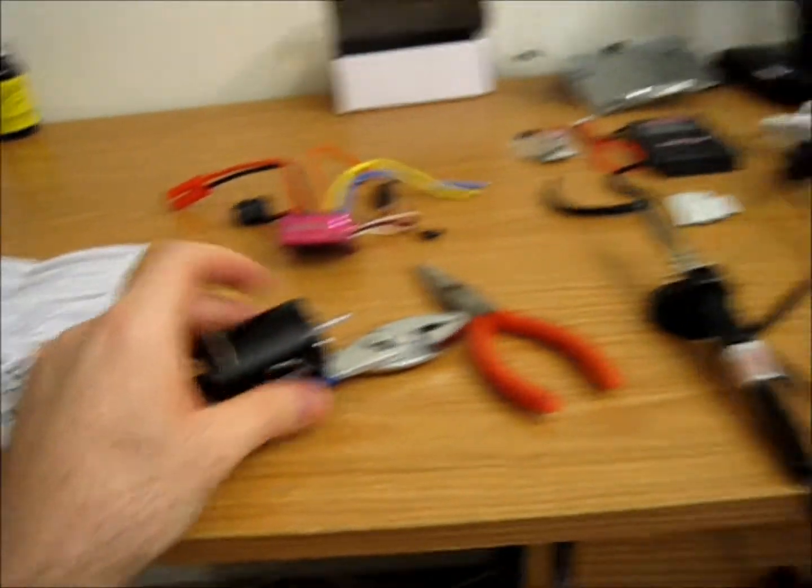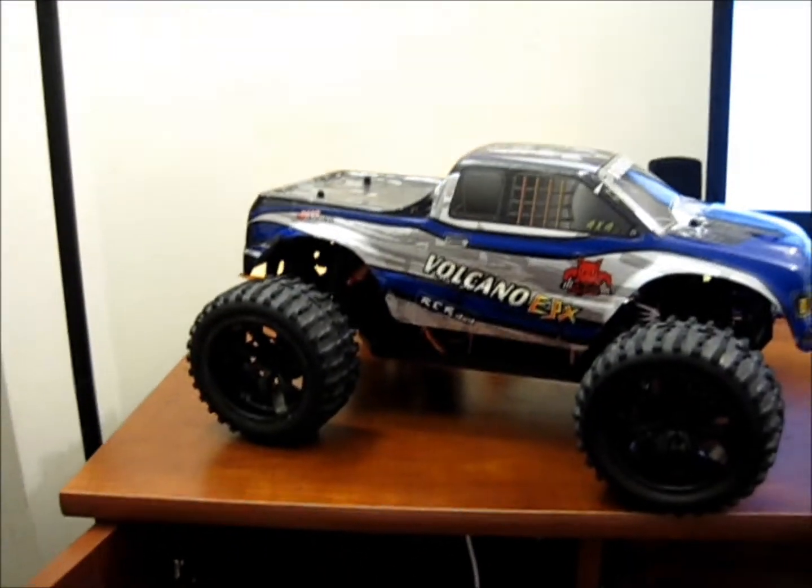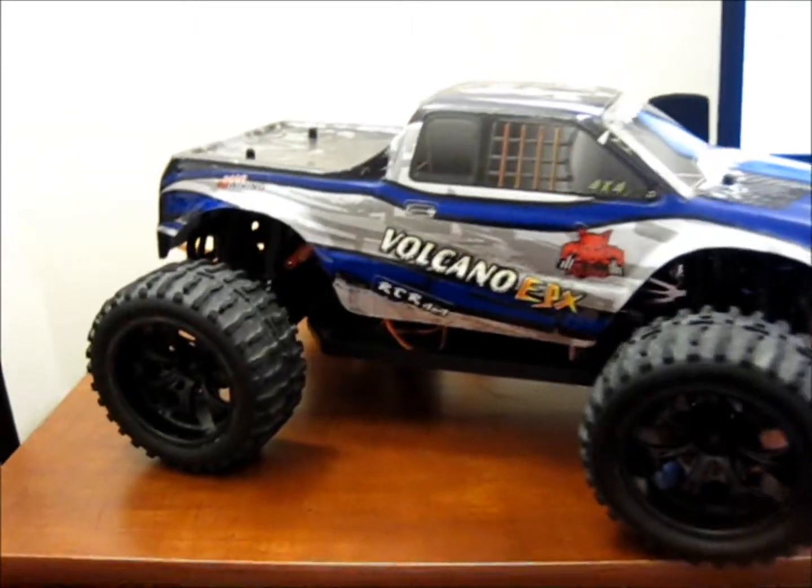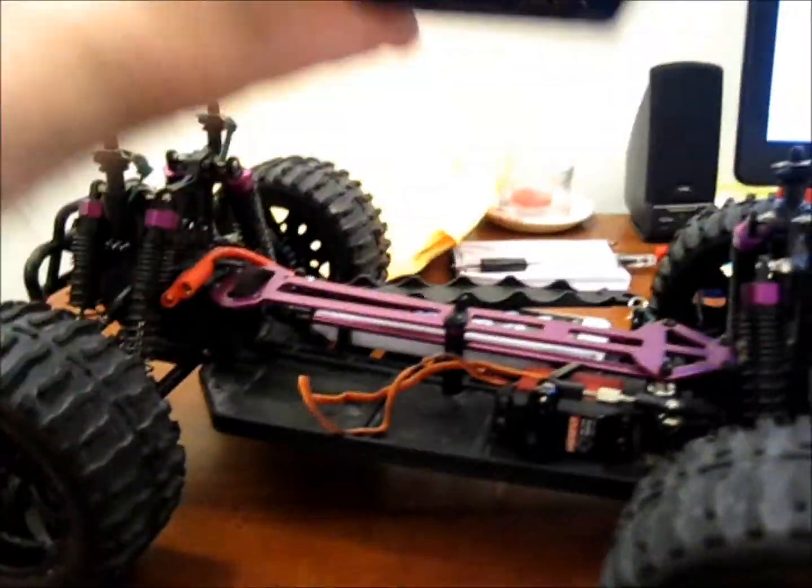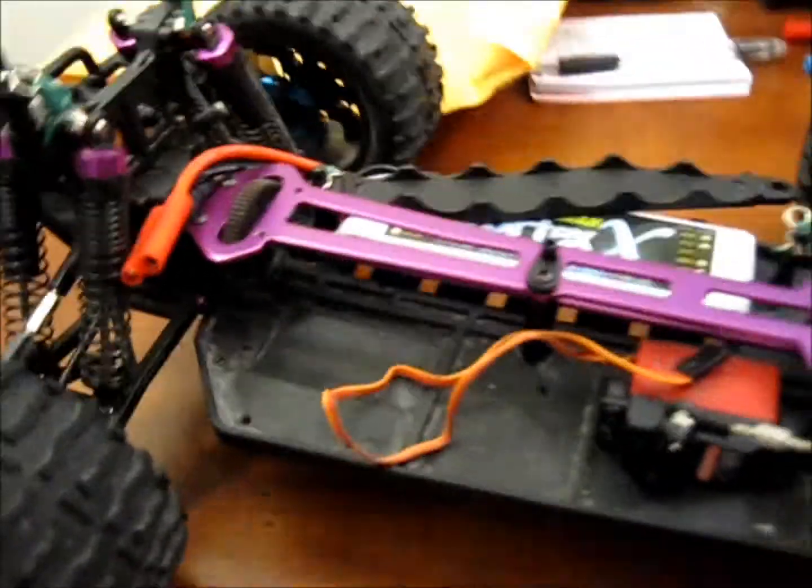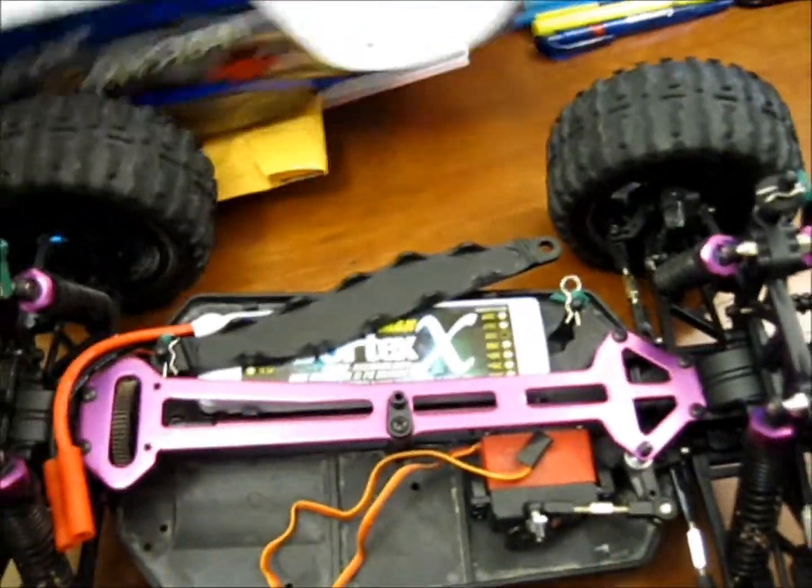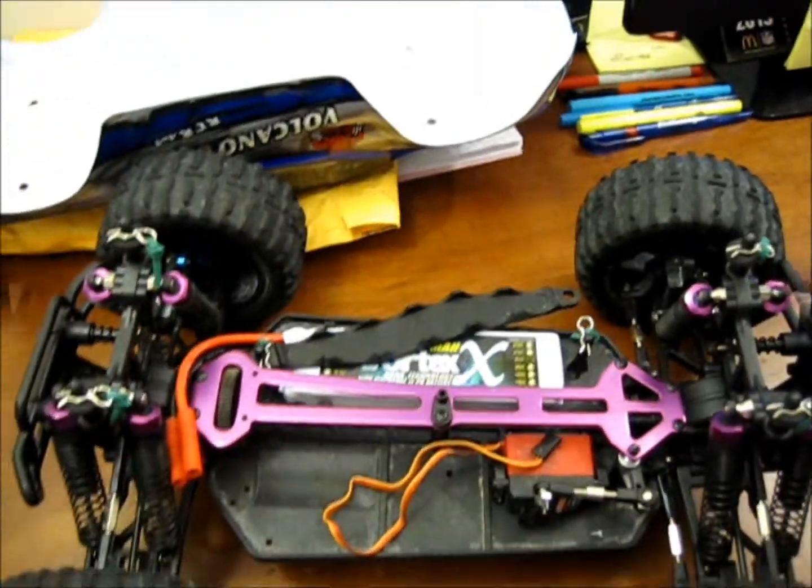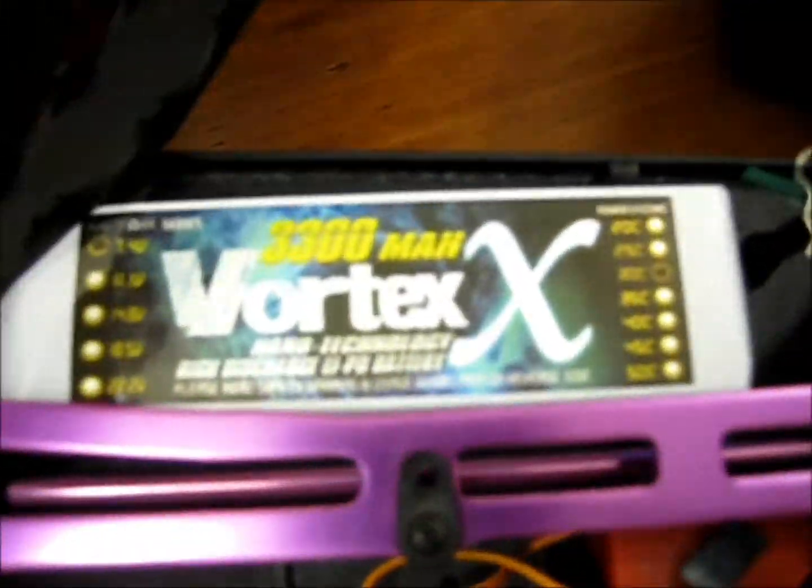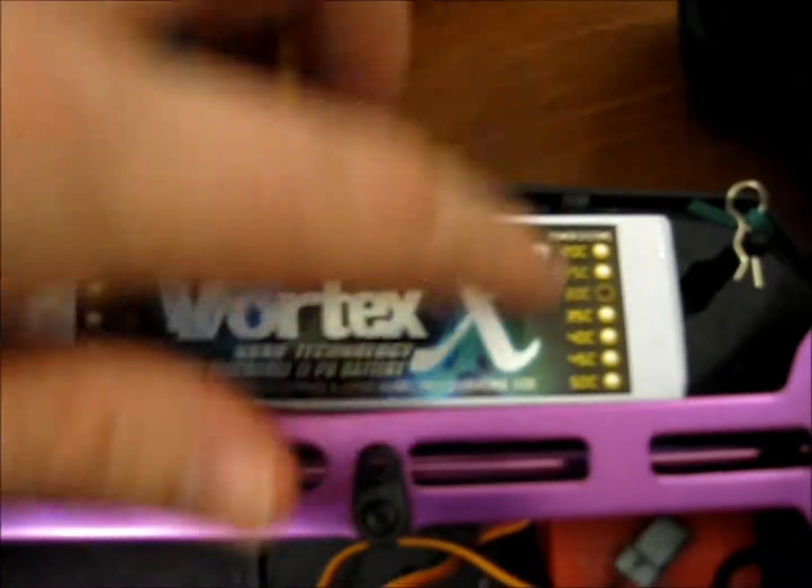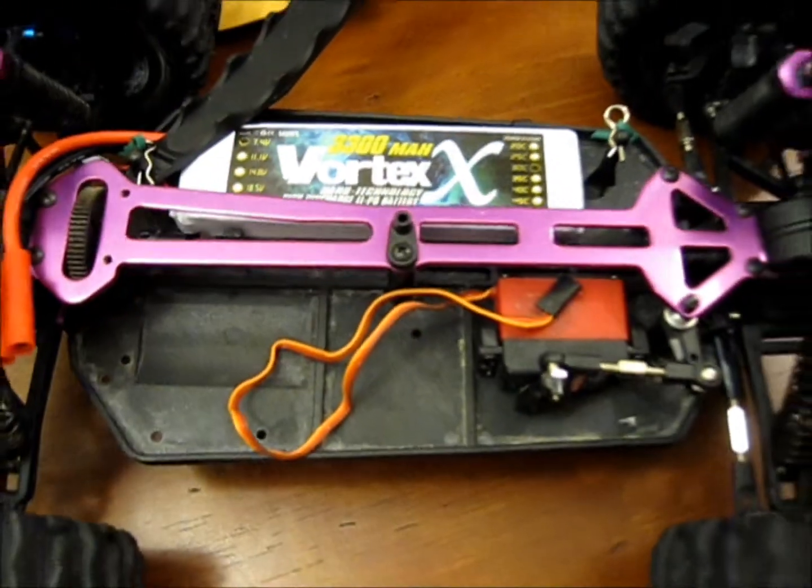Looks pretty nice. Of course it is going to go into my Redcat Volcano EPX. As you can see I have already stripped it down. There is my 2S. Oh there you go, that is a 30C.